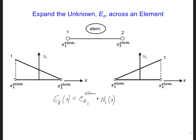And then we add on the value of Ez at node 2 of that element, multiplied by the interpolation function for node 2.